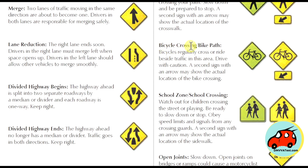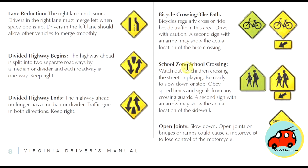Bicycle crossing and bike path signs mean that bicycles regularly cross or ride beside traffic in this area — drive with caution, and a second sign with an arrow may show the actual location of a bike crossing. School zones and school crossings mean you should watch for children crossing the street or playing — be ready to slow down and stop, obey speed limits, and follow signals from crossing guards. A second sign with an arrow may show the actual location of the crosswalk.